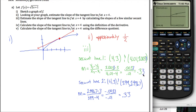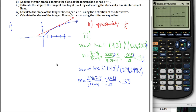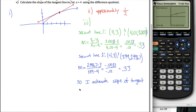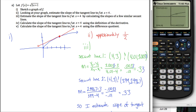I did these two secant lines and they were pretty close to each other. So I estimate the slope of the tangent line to be 0.33 — that looks like it's pretty close to one third. You don't know that's right; it's just a guess at this point. But that seems like a good estimate. Finally, in part 4, you can actually calculate this using the definition of the derivative.